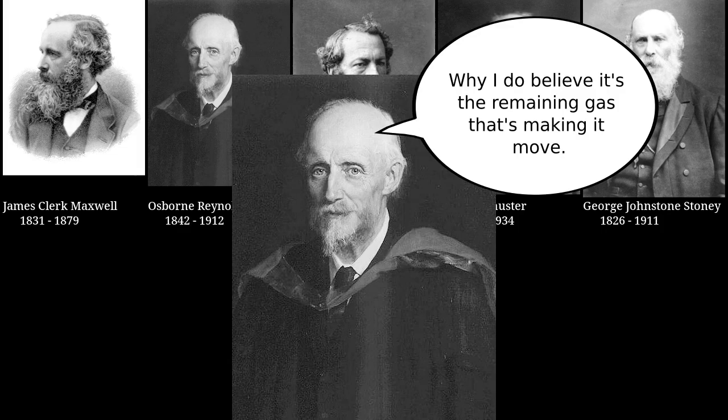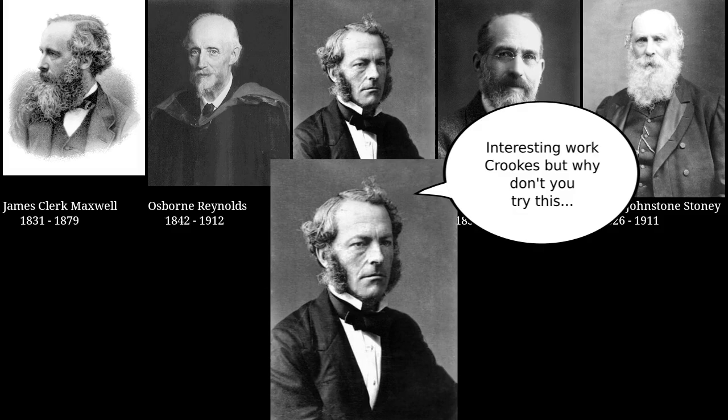The physicist George Stokes, who was president of the Royal Society at the time, was very interested in Crookes's work and gave him suggestions for new experiments to try and new ways to modify the radiometer. Through these experiments, Crookes slowly came around to the idea that it was the residual gas that was causing the vanes to move. What finally convinced him was that he found that the vanes would stop turning when the pressure got low enough. No gas, no turning.